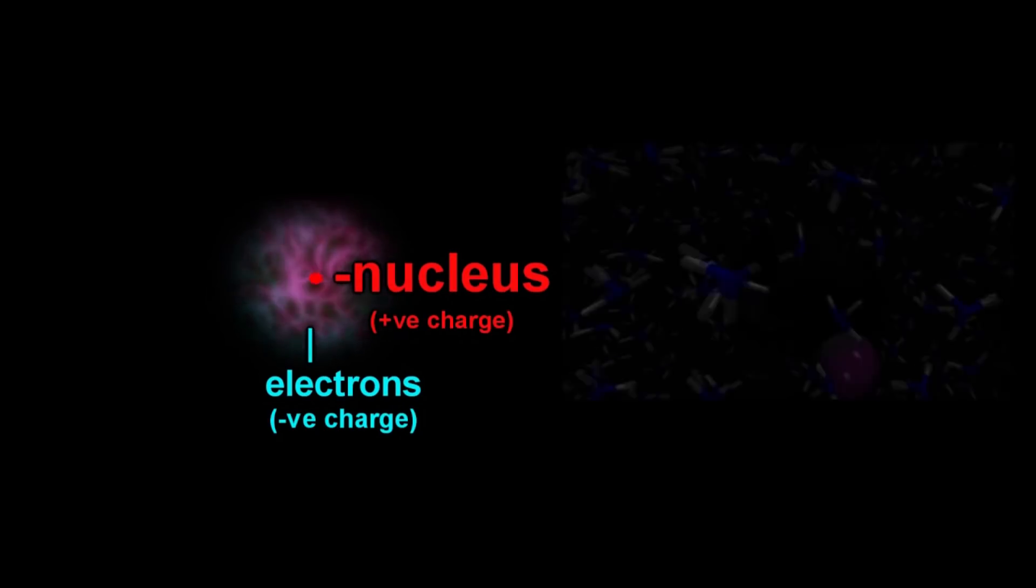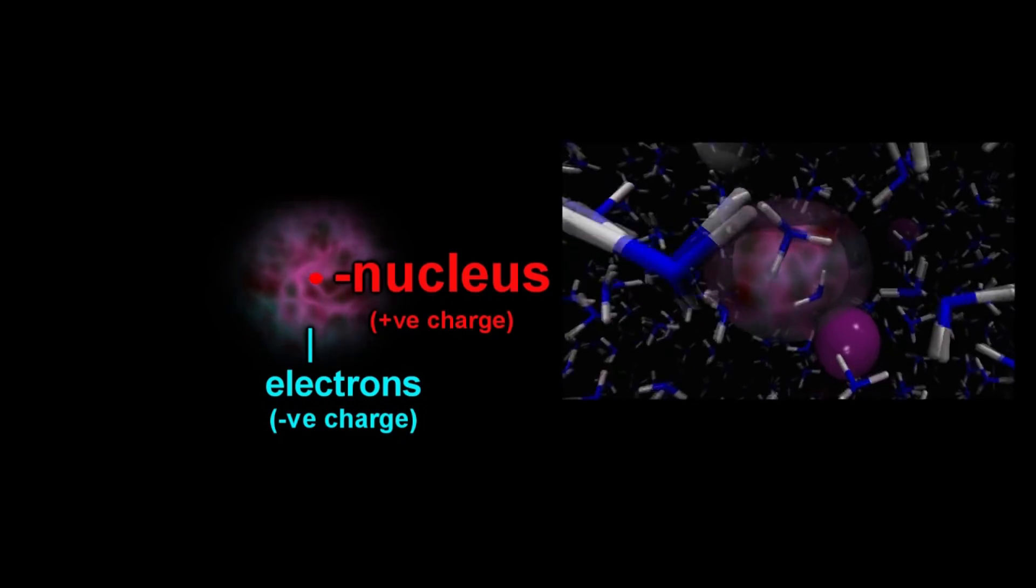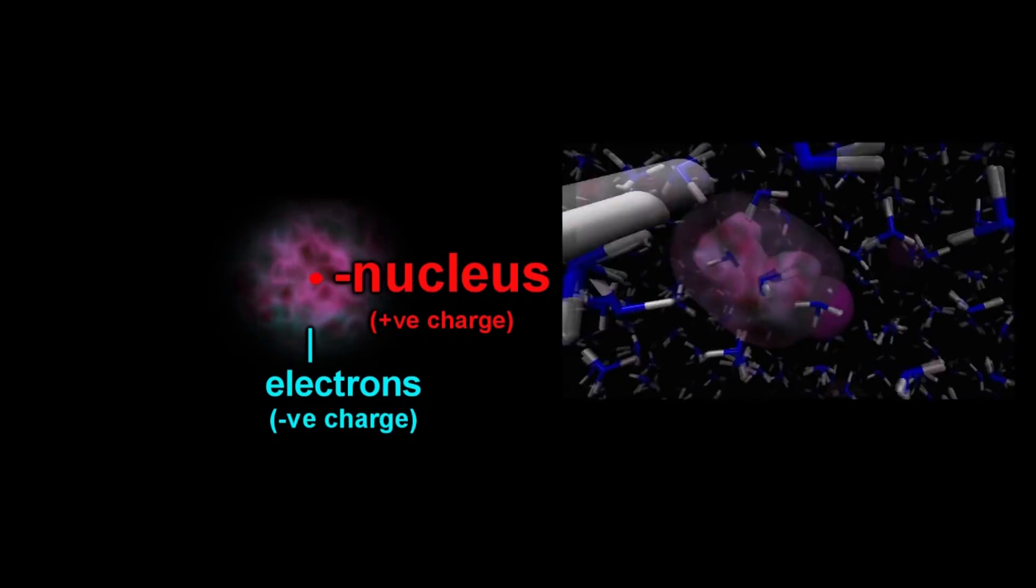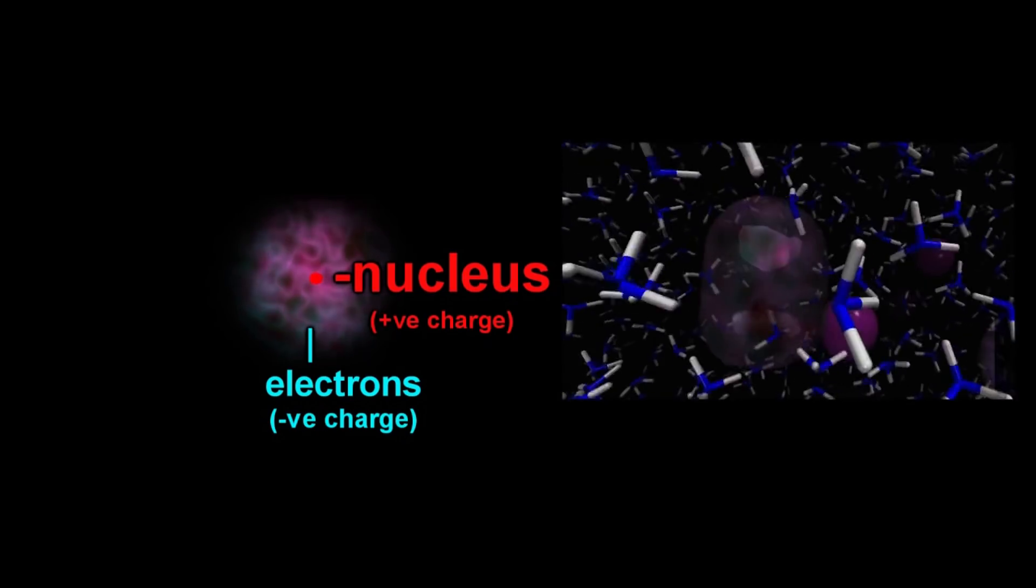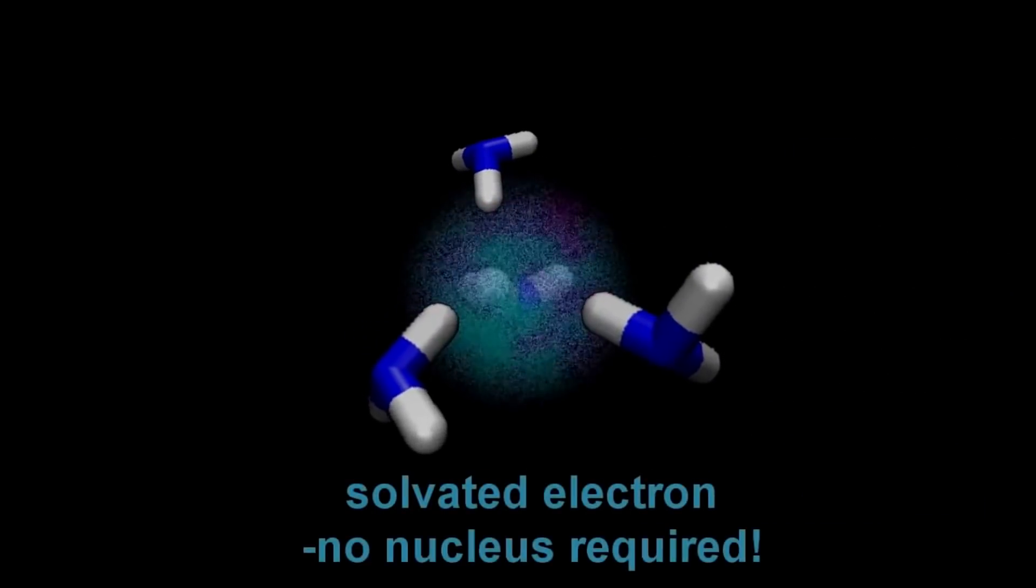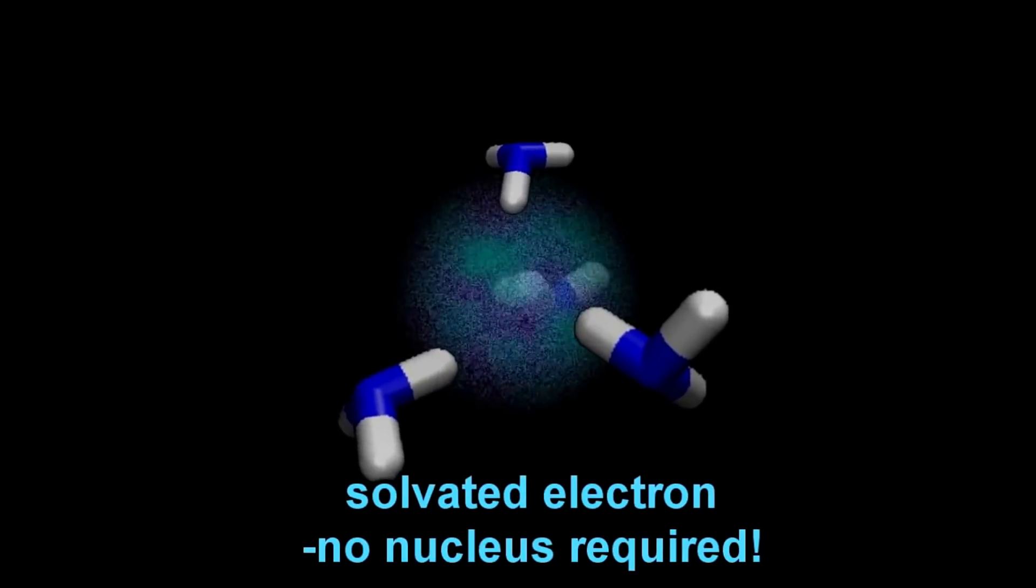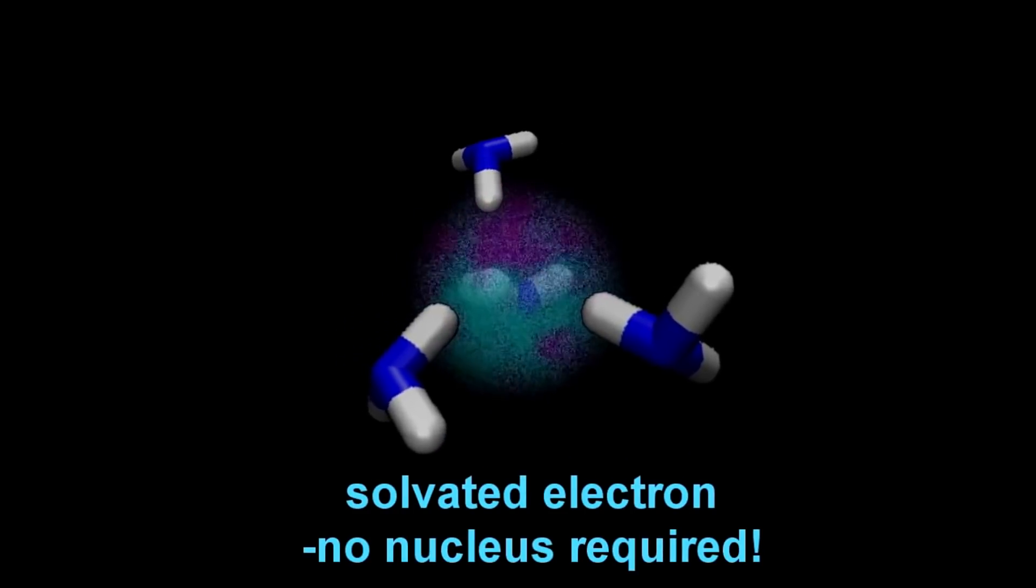You see, electrons are almost universally found in cavities where there's a nucleus in the middle, an atom. But liquid ammonia is just the right polarity in which you can create these cavities in which electrons are stable without a nucleus. There's just an electron sat there in the middle, and the molecules point all their polar bits in towards that electron to stabilize it.